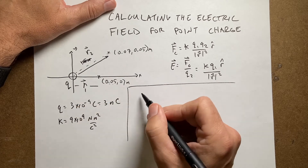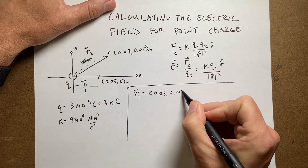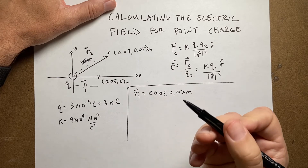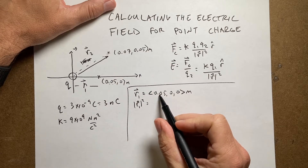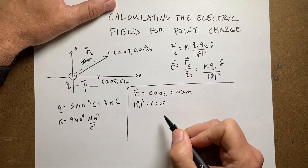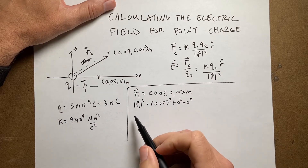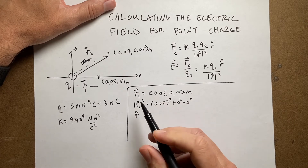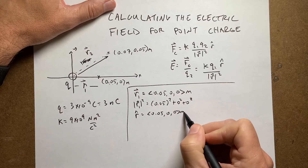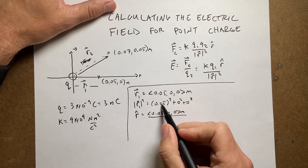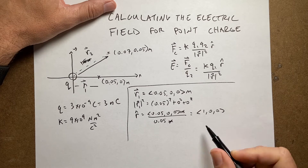Step one is to find r. So r1 is going to be equal to the vector (0.05, 0, 0) meters. Next I need to find the magnitude squared — that's 0.05 squared plus 0 plus 0 squared. Now I need to find r hat, the unit vector in the direction of r. That's going to be (0.05, 0, 0) divided by the magnitude, which is 0.05. The meters cancel, so r hat is (1, 0, 0) — a vector in the x direction.